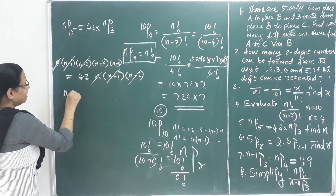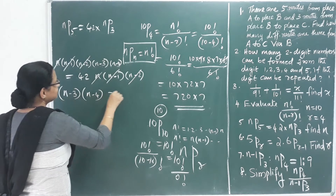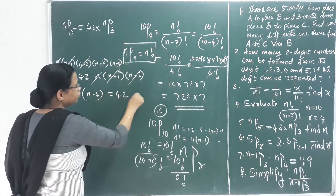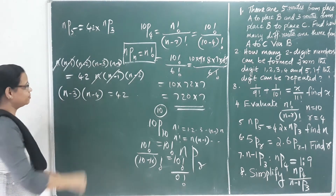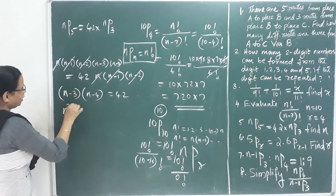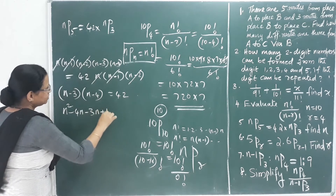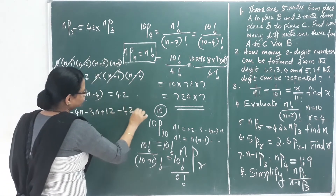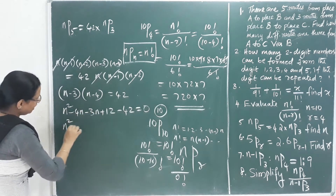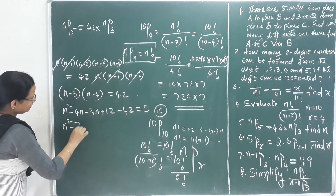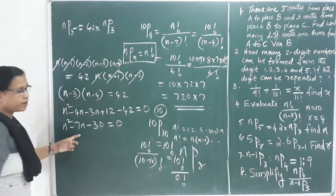What is remaining after cancellation? We have (n−3) × (n−4) equals 42. Expanding: n² − 4n − 3n + 12 = 42, which gives n² − 7n + 12 − 42 = 0, so n² − 7n − 30 = 0.